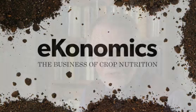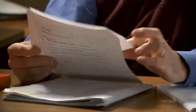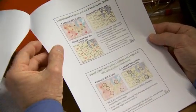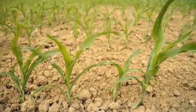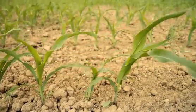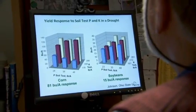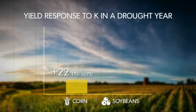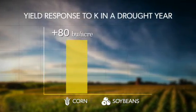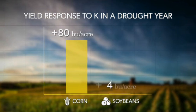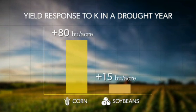A good example of drought and its impact on K response comes from a long-term study that Ohio State University did. It was a study where they had established a range of soil test potassium levels. A drought year came along and during that drought year the responses were just huge. The corn part of the crop rotation showed an 80 bushel response to the elevated K levels. Soybeans showed a 15 bushel per acre response. That was one year, but it's consistent with what we have seen in other studies.